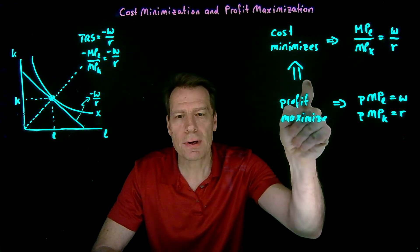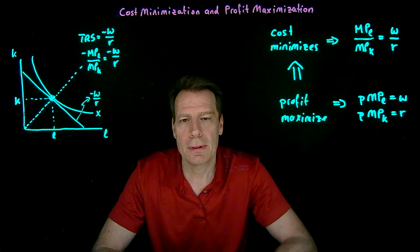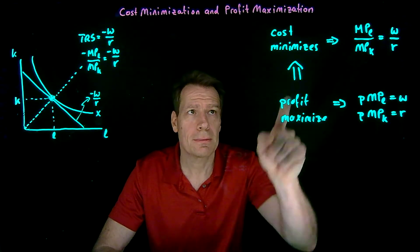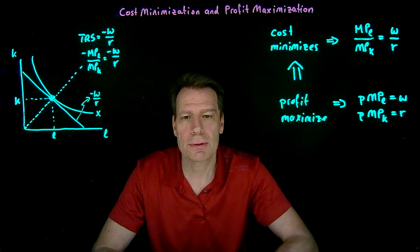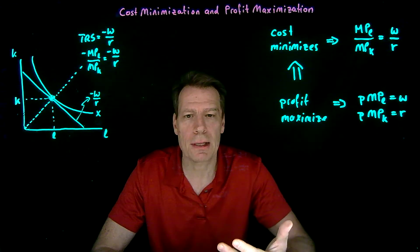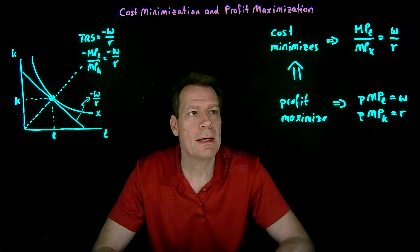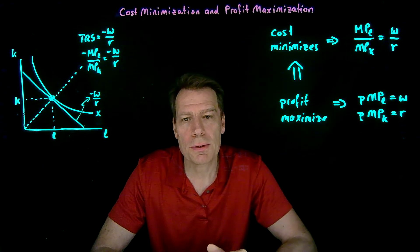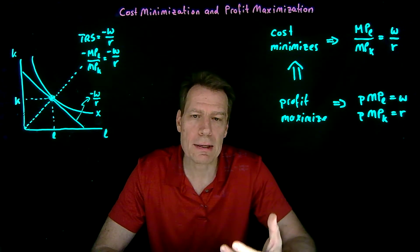But the implication does not run in the other direction. If you just do the first step of the two-step profit maximization, you minimize your costs. You produce an output level at the least cost possible. Then it doesn't imply that you're profit maximizing because we don't know whether you've chosen the right amount to produce.